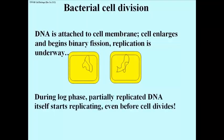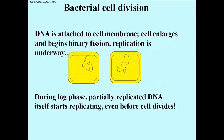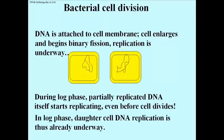During the log phase, partially replicated DNA is itself already beginning to replicate. So what you see as these two cells have divided, there is already part of a new chromosome attached to the original chromosome in these cells, and this has begun to happen even before the cells divided. In the log phase of growth of bacterial cells, daughter cell DNA replication is well underway before the daughter cells actually separate by binary fission.